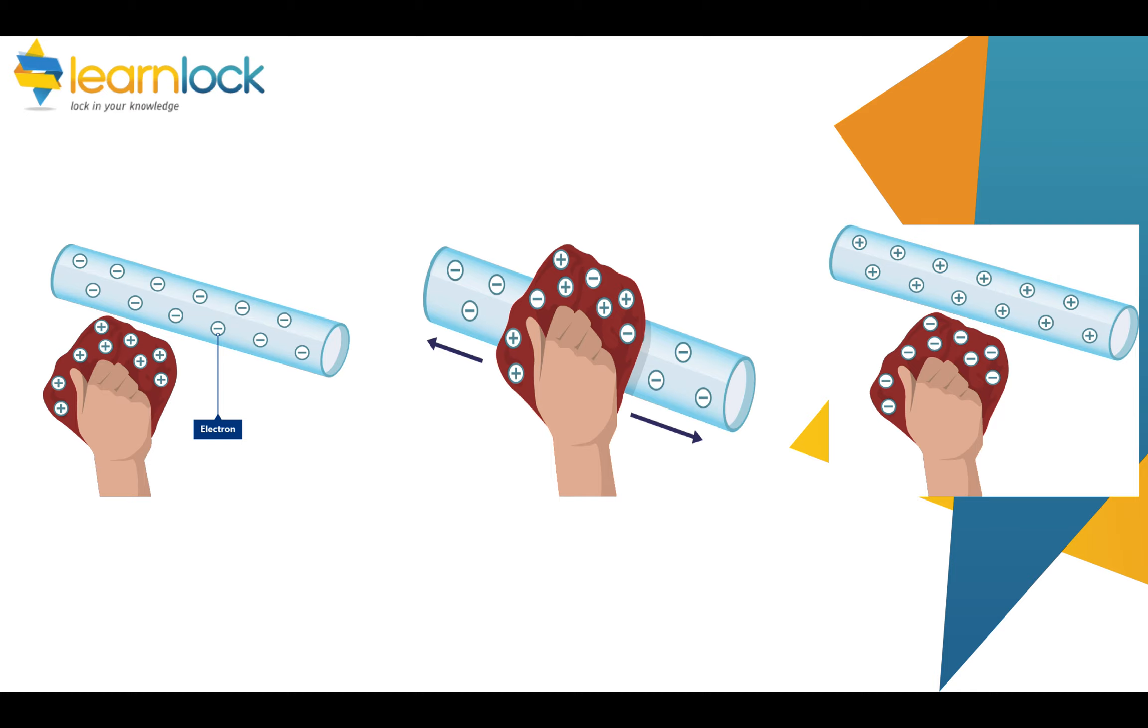Here's an example. If this rod is rubbed with a cloth, you can see that the electrons move onto the cloth. The cloth becomes negative, the rod becomes positive.